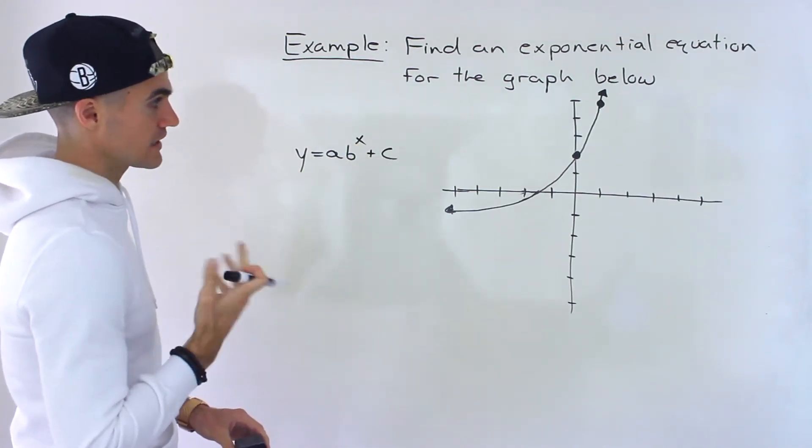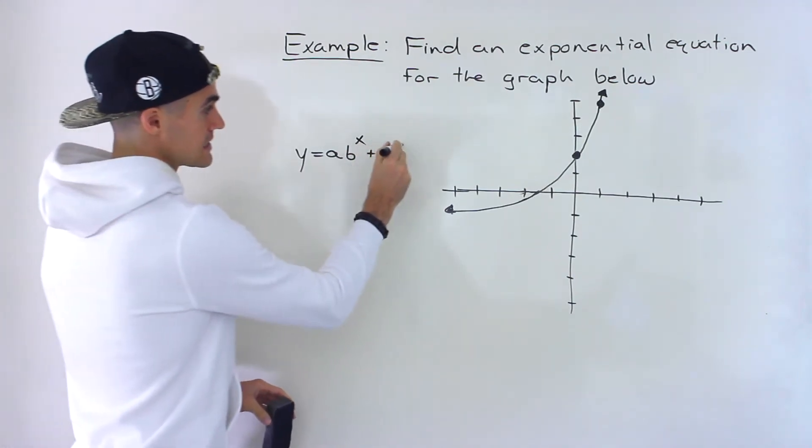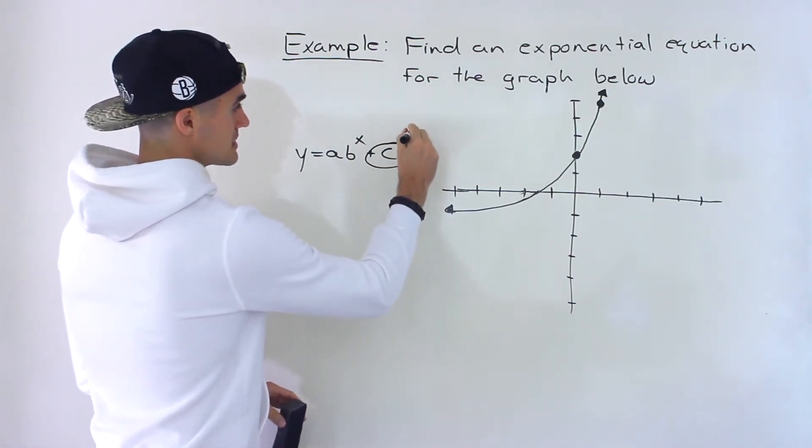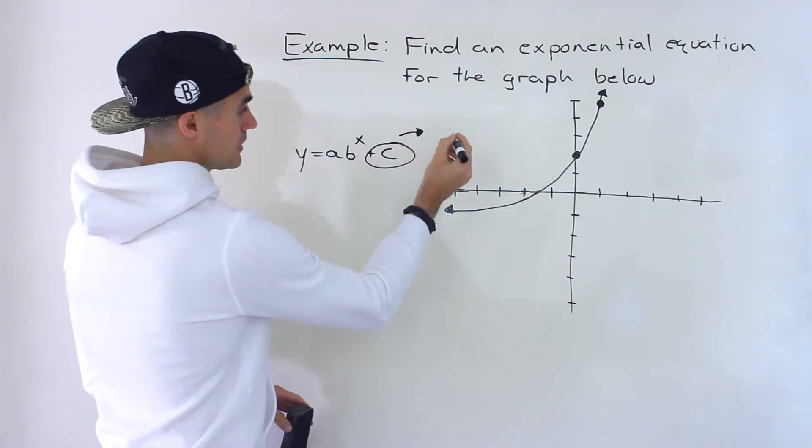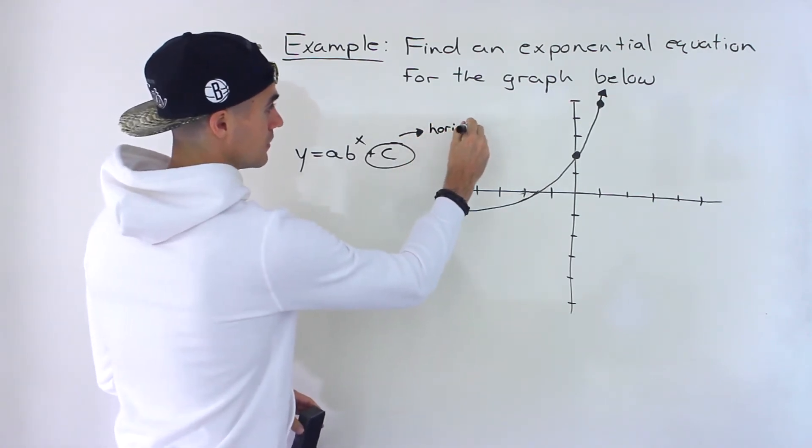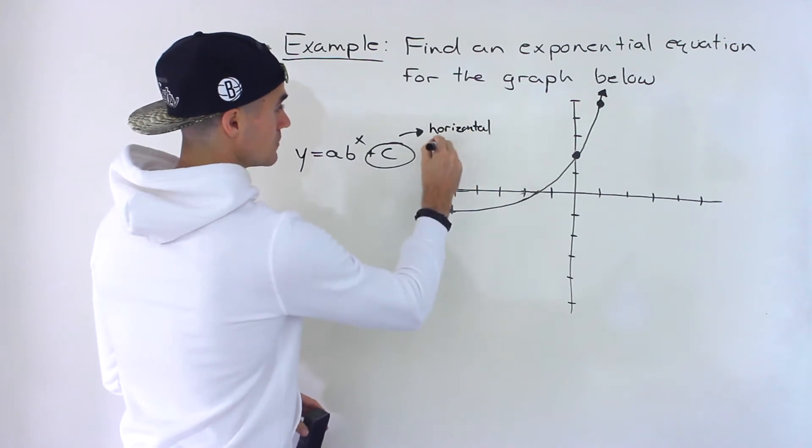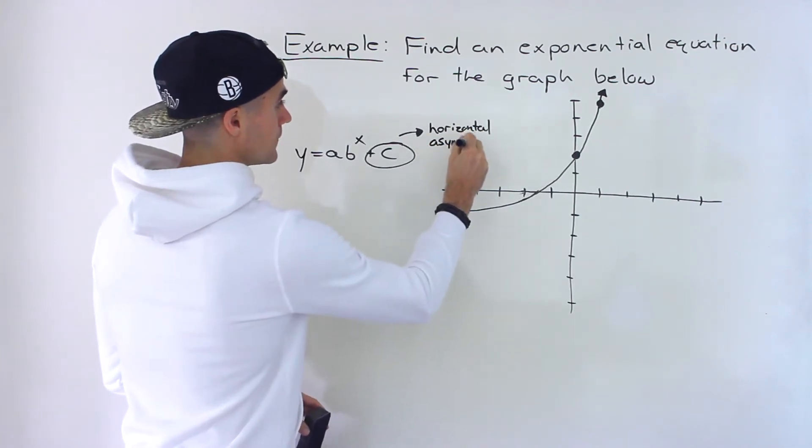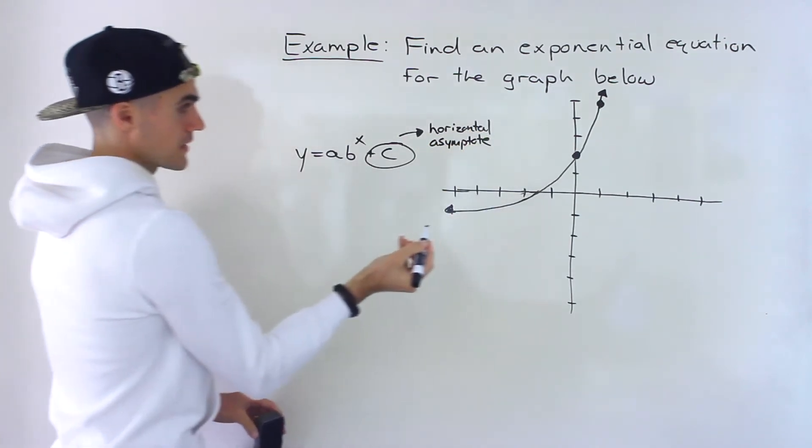Now personally, the first thing that I like to look for is the c value, because the c value is always going to be the horizontal asymptote of an exponential function.